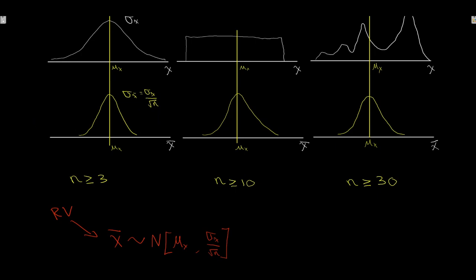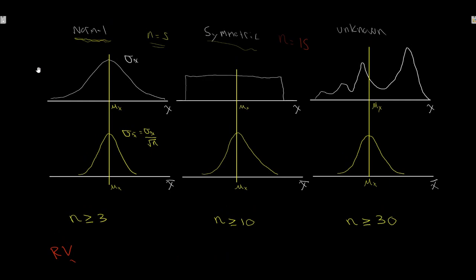Those conditions were: if our population distribution of x can be assumed normal, then yes, we can say x-bar is normally distributed as well. If our population of x is symmetric — for example, a uniform distribution, though it doesn't have to be uniform — symmetry means the population mean mu equals the median. If that is true, then our sample mean will be normally distributed if we pull out sample sizes of 10 or more.